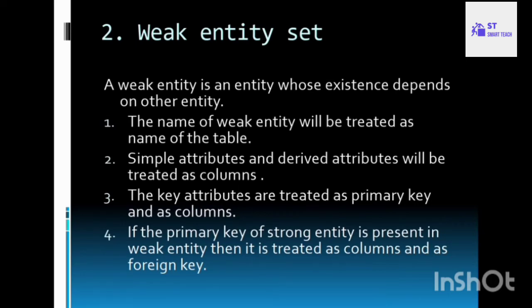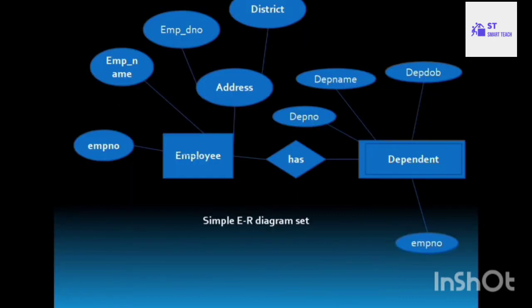Next, weak entity. A weak entity is an entity whose existence depends on another entity. In other words, the entity which does not contain any primary key is known as a weak entity. To convert a weak entity into a table: the name of the weak entity is the table name, simple and derived attributes are columns, and key attributes are treated as primary key.